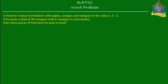So he's making fruit baskets with apples, oranges, and mangoes in the ratio 3 to 5 to 2, which means that each basket has got 3 sets of apples, 5 sets of oranges, and 2 sets of mangoes. Each set is of the same size. Let's read the rest of the question.